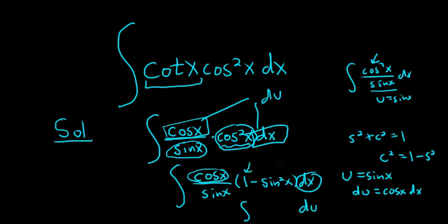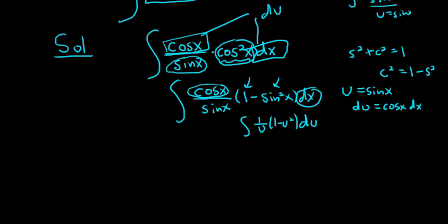That's 1 minus u squared. So it's 1 over u times 1 minus u squared. Now we can distribute the 1 over u. So this becomes 1 over u minus u, and then u squared over u is just u. Du.